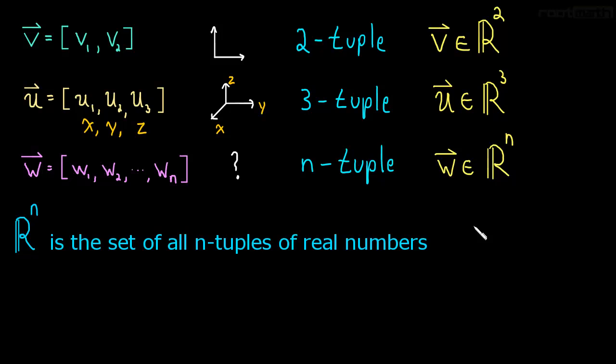So I know this is a lot all at once, but really what's important here is this notation. This is going to come up all the time. We're going to use it throughout the rest of the course. And if it helps you remember, just remember that the number up here is going to be the same as the number of components. So we can read this: v is an element of R^2 means v is a vector with two components. u is a vector with three components. w is a vector with n components.